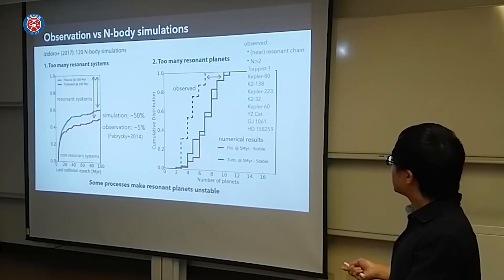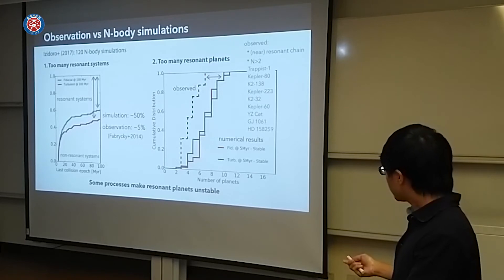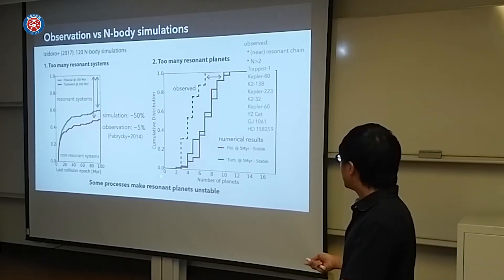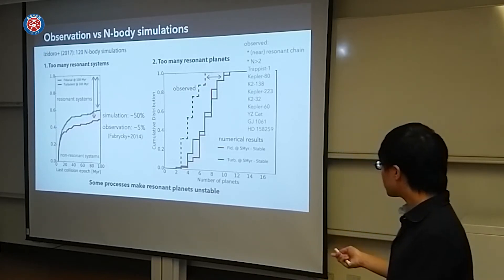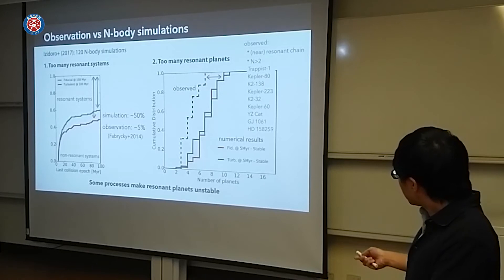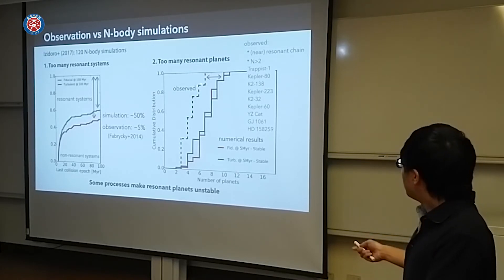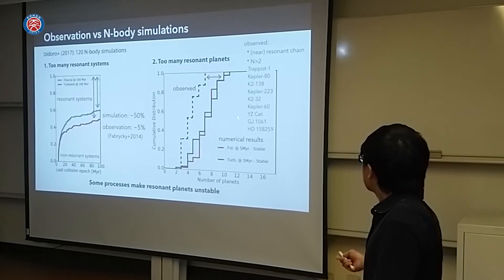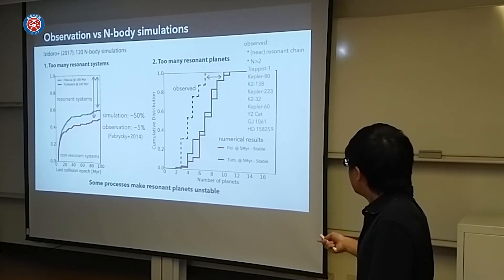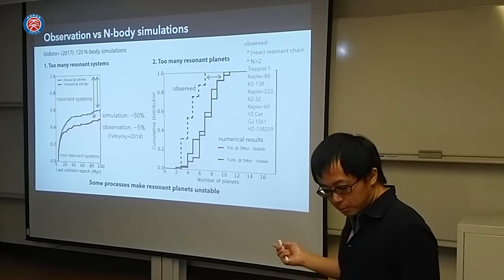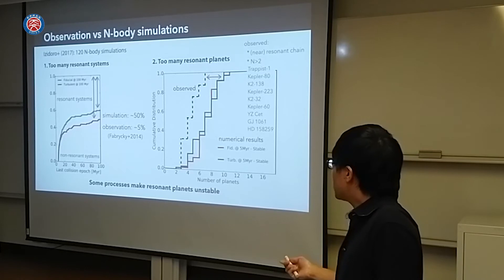Another point is too many planets are in resonances. There are numerical results like this. Here I put the observed planets with this side. I picked up these criteria and picked up these planets. Observed planets are this. Numerical results produce some large number of planets in resonances. These two differences suggest there are some mechanisms, some processes that make resonant planets unstable.